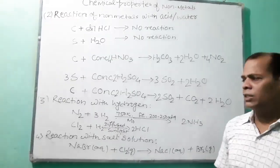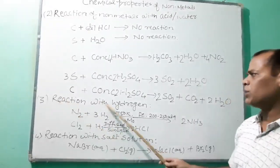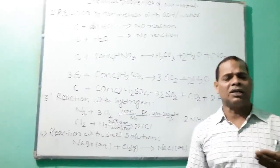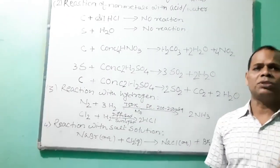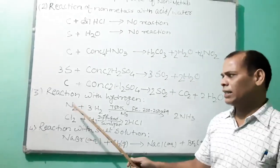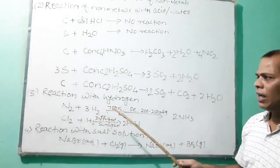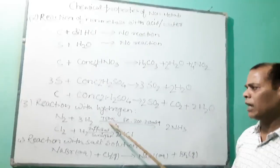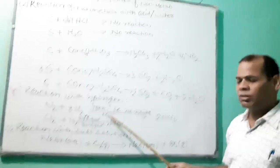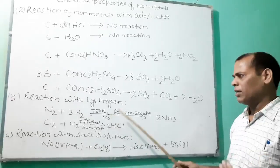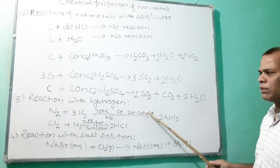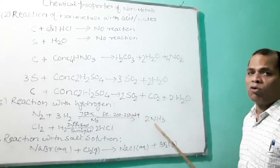The next chemical property of non-metals is their reaction with hydrogen. Non-metals react with hydrogen to form their corresponding covalent hydrides. For example, nitrogen reacts with hydrogen at 750°C in the presence of an iron catalyst and molybdenum as a promoter, at 200 to 250 atmospheric pressure, to form ammonia.